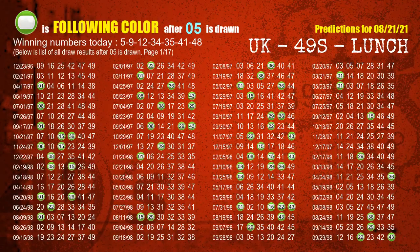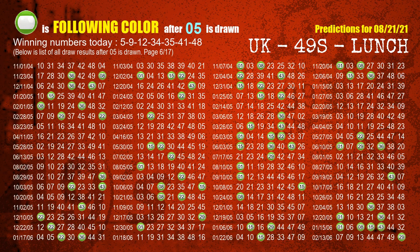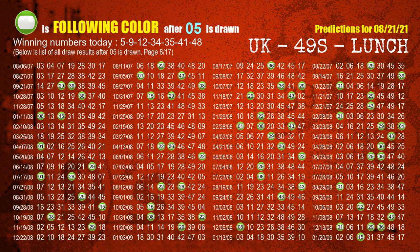Besides following ones, we need more clues for winning numbers of the next draw, so we will find out the most drawn ball color through today's result. Following ball colors refer to the color of those numbers being picked on the next draw after this one. The first winning number is 05 — the most frequently following color is green when 05 is the winning number in the last draw. We highlight the color green with a color ball image for you.